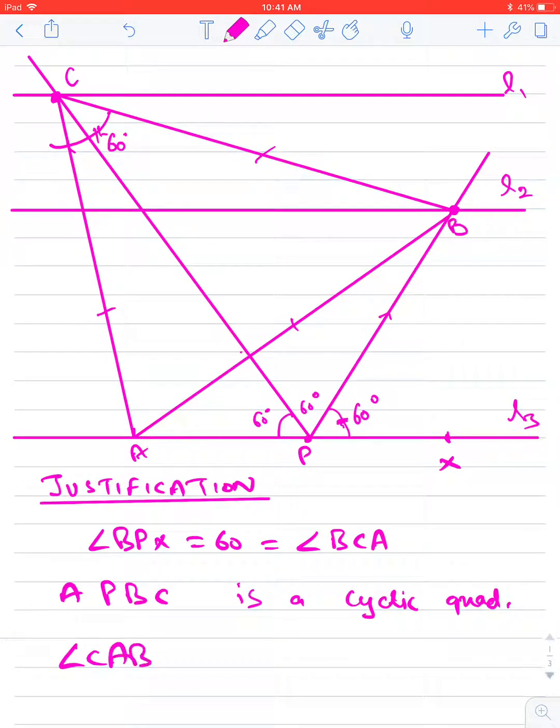Angle CAB, that is this angle, is equal to angle CPB, which is equal to 60 degrees. That is this angle, this angle, is equal to this angle, both are equal to 60 degrees.